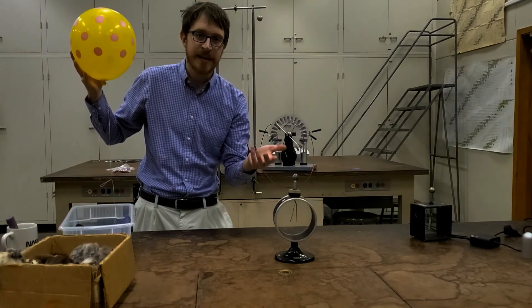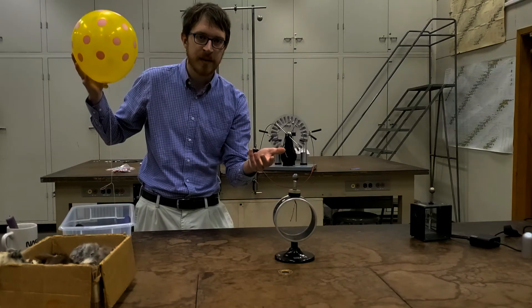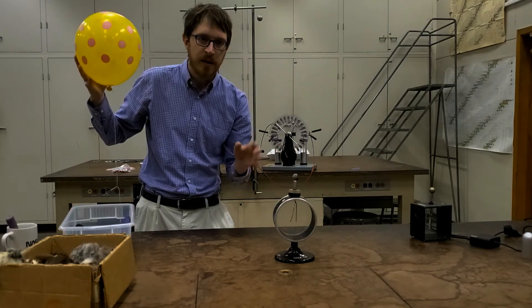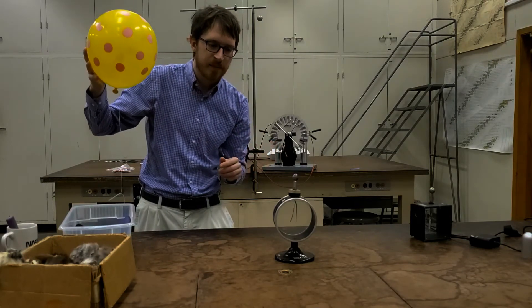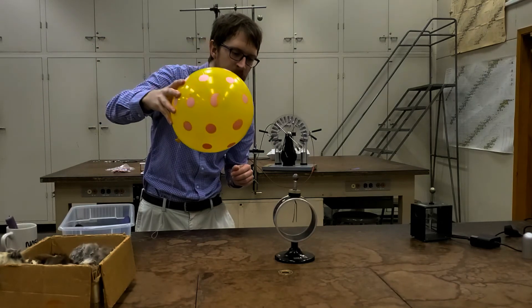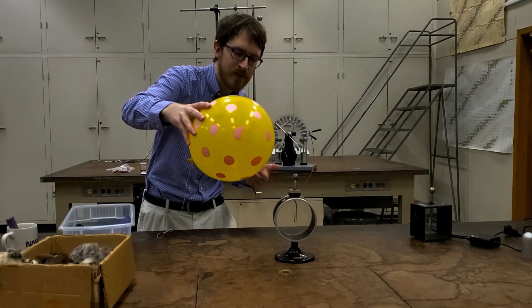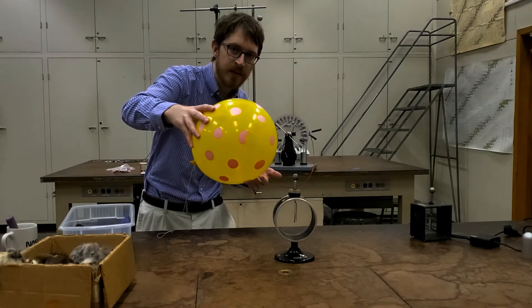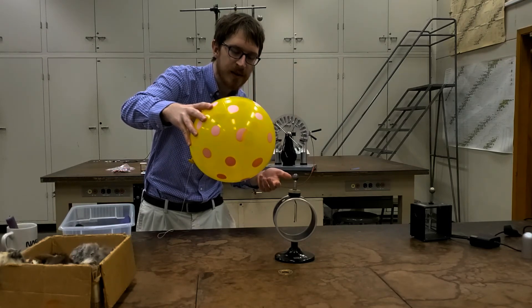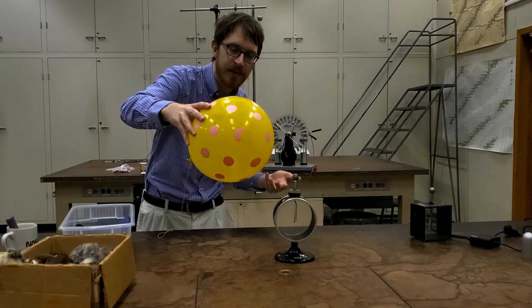The electroscope has some net charge on it now. It's been charged up through induction. And now if I bring the balloon back, if I bring it this close where it was originally, the leaves are once again together. That means there's no charge on the leaves, although there might still be net charge on the electroscope itself.